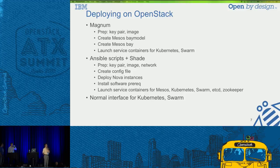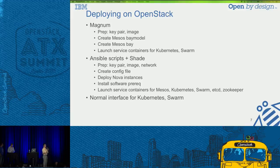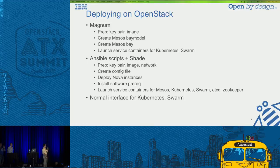One way is by Magnum, an OpenStack project. With Magnum, there's some prep work to do manually: prepare the key pair and the image, then create a bay model — in this case, a Mesos bay model — and invoke Magnum to create the bay. Right now we don't have support yet for deploying the Kubernetes and Swarm frameworks, but I'm working on a couple of patches, so we should have that capability pretty soon.